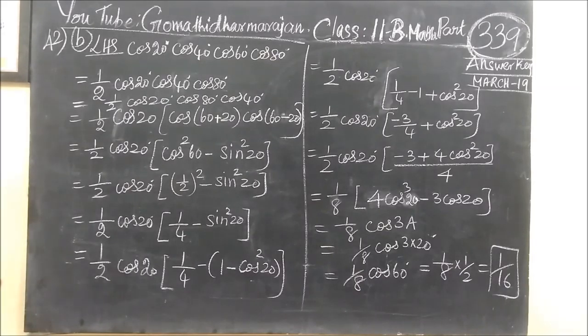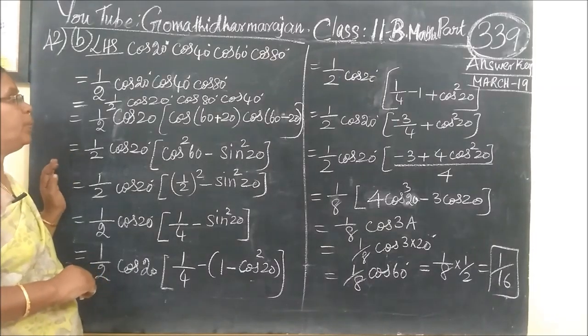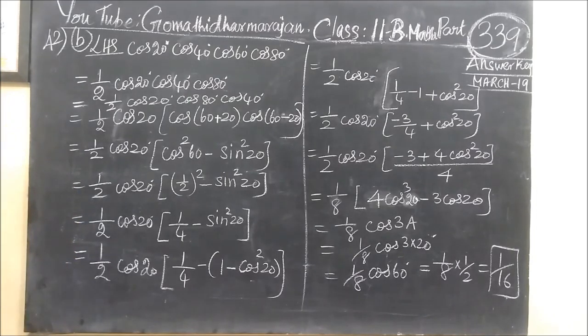Now we are going to solve question number 42, which involves cos 20, cos 40, and cos 60. This is one of 35 important questions we need to cover.